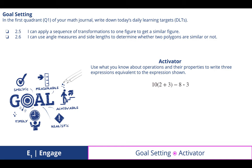In the first quadrant of your math journal, write down today's daily learning targets: 2.5, I can apply a sequence of transformations to one figure to get a similar figure. And 2.6, I can use angle measures and side lengths to determine whether two polygons are similar or not.